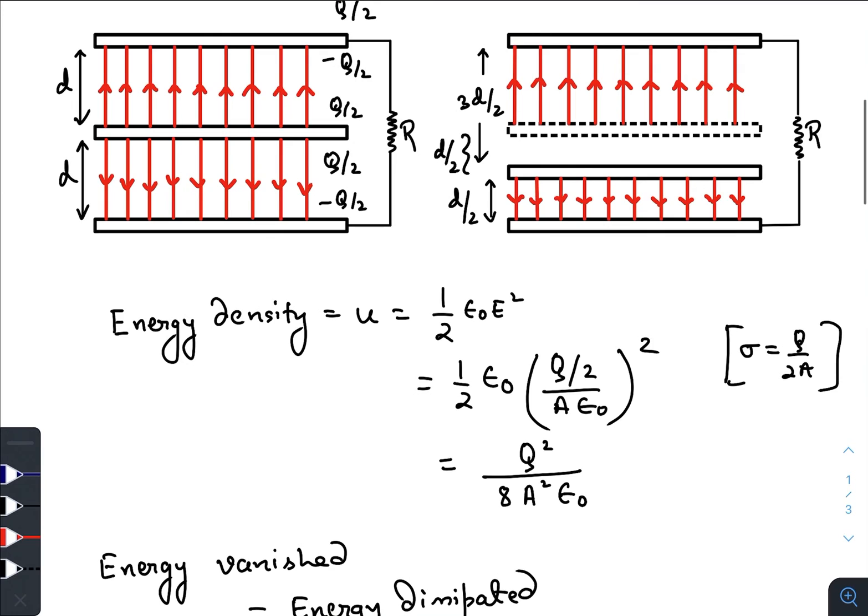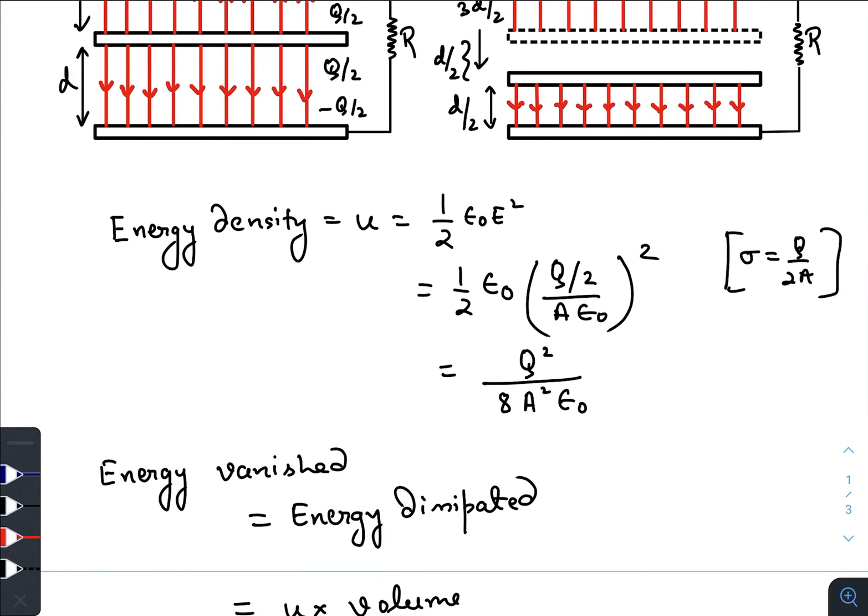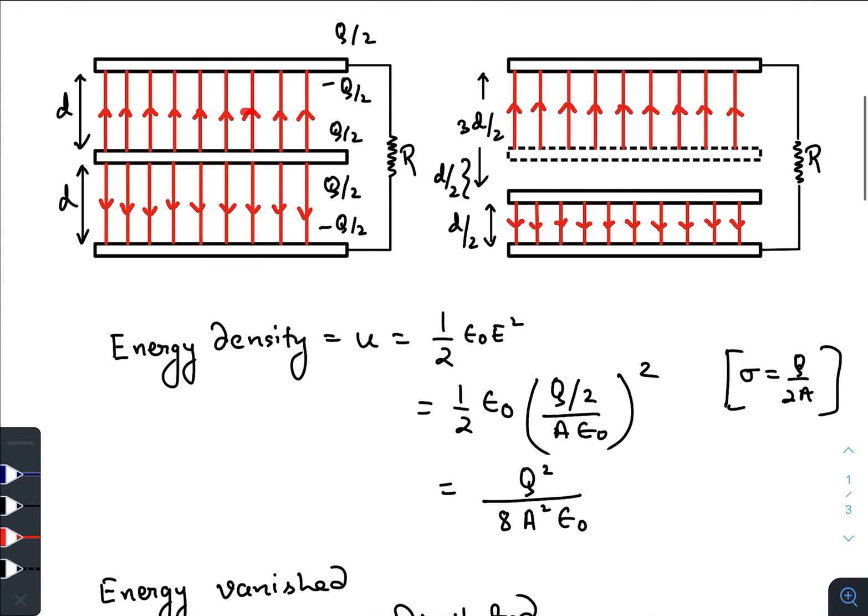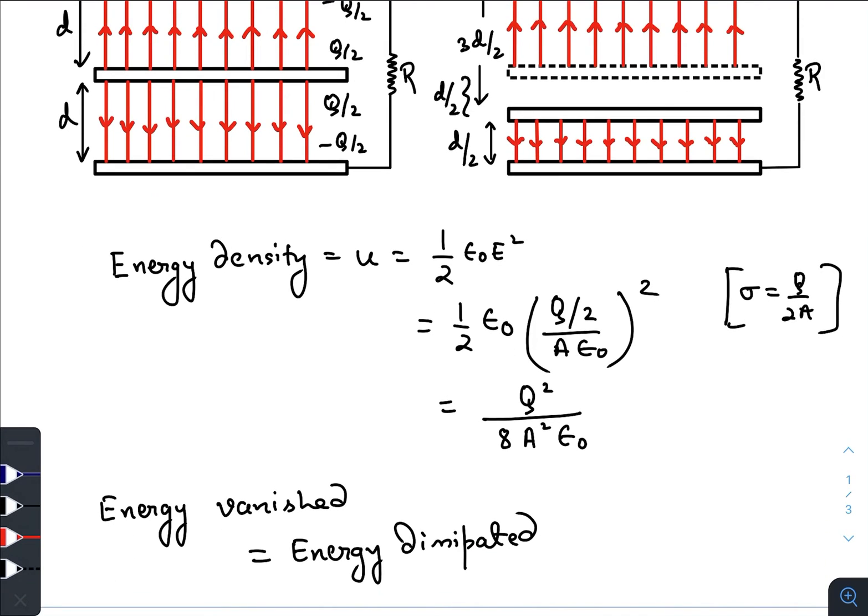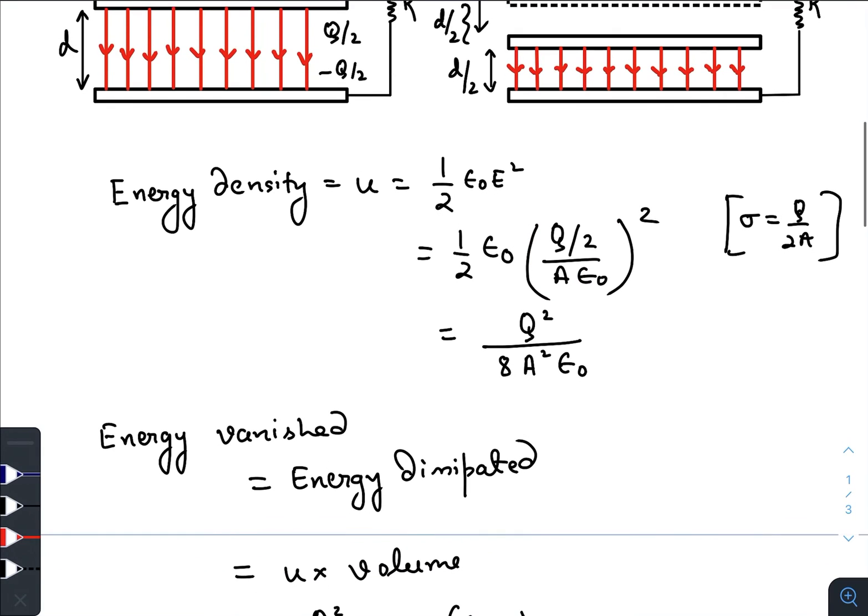Electric field was half epsilon naught, as electric field in both the regions before the shift was equal. It was half epsilon naught, E was sigma by epsilon naught, sigma is Q by 2 divided by A epsilon naught whole square. This was the energy density.